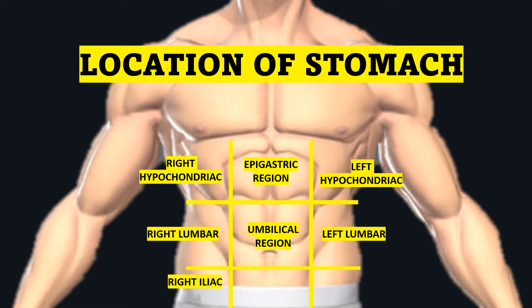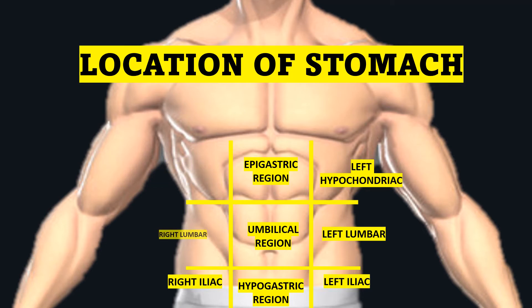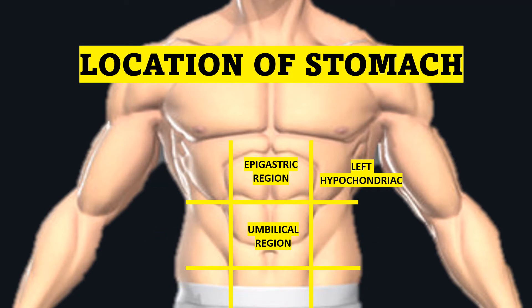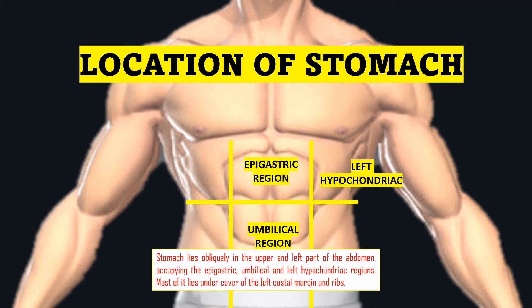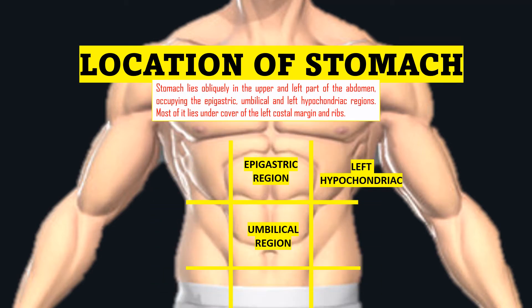The remaining quadrants are the left lumbar region, right iliac region, hypogastric region, and left iliac region. The stomach lies obliquely in the upper and left part of the abdomen, occupying the epigastric, umbilical, and left hypochondriac regions. Most of it lies under cover of the left costal margin and ribs.